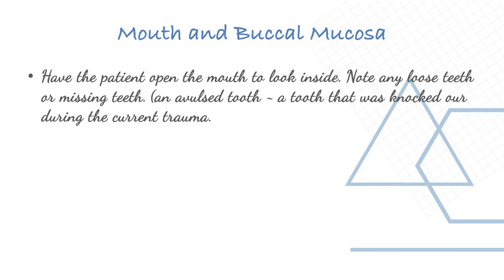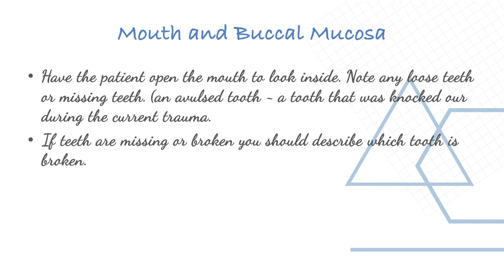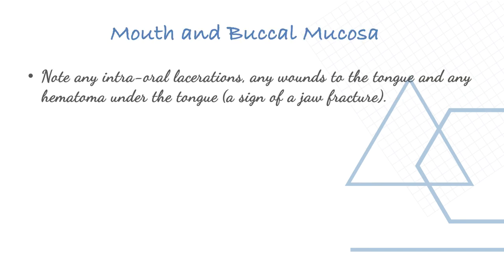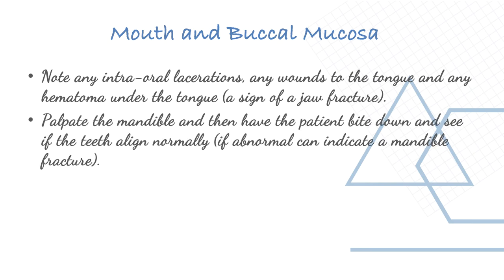For mouth and buccal mucosa assessment, have the patient open the mouth to look inside. Note any loose or missing teeth and describe which tooth is broken. Note any intraoral lacerations, wounds to the tongue, or hematoma under the tongue. Palpate the mandible and have the patient bite down to see if the teeth align normally — abnormal alignment can indicate a mandible fracture.